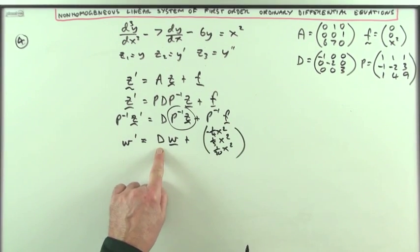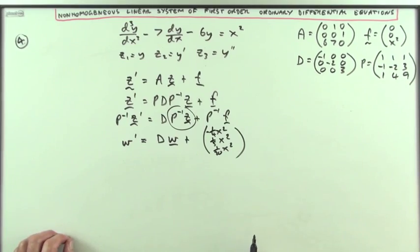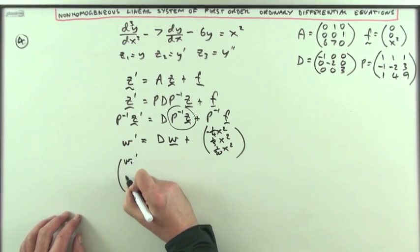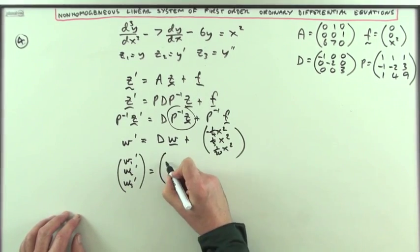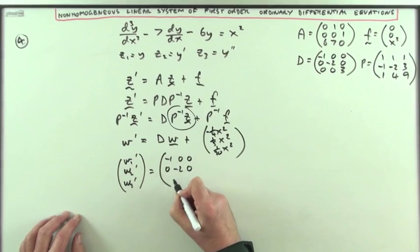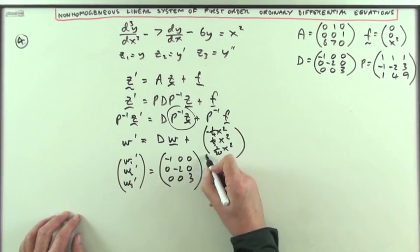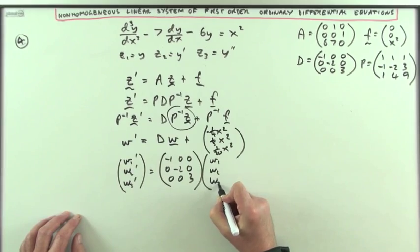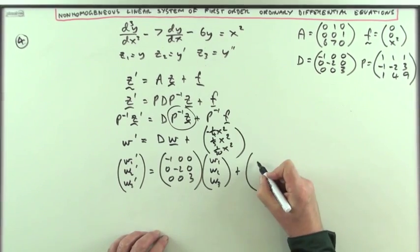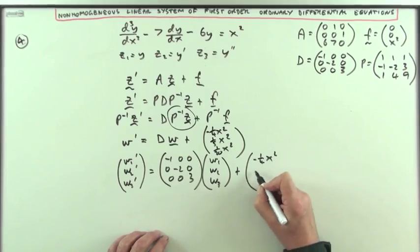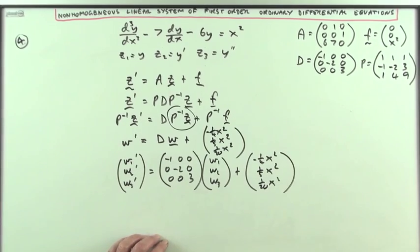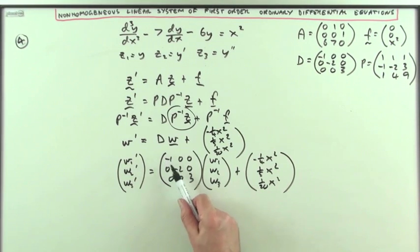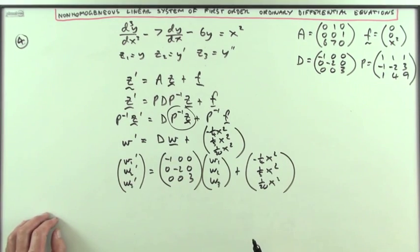So that this part here then will be g, which is negative 1/4 x squared, 1/5th x squared, and 1/20th of x squared. Clear that away. Since that's a diagonal matrix, it means they're all separated now. So that means I've got w1 dashed, w2 dashed, w3 dashed for those three functions is negative 1, 0, 0, 0, negative 2, 0, 0, 0, 3 times w1, w2, w3, plus this little column of additional functions, which is readily separable because, or thanks to this diagonal matrix, into three separate first order ODE's.